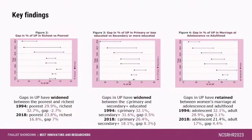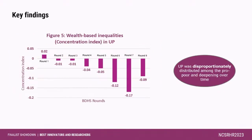In this section, we discuss inequalities. We have seen that the gaps in unintended pregnancy have widened between the poorest and the richest. The same goes for less than or equal to primary educated women versus secondary plus educated women. Through the concentration index, we have seen that unintended pregnancy was disproportionately distributed among the pro-poor, and this persisted over time.